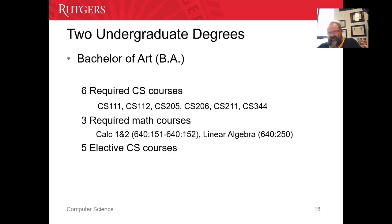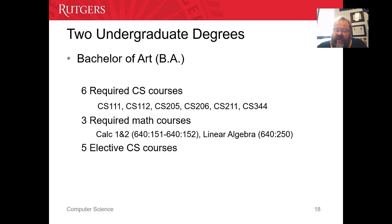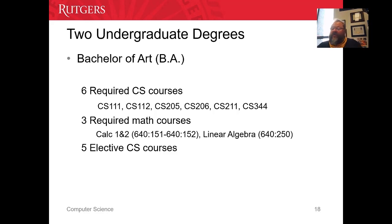Every computer science student who gets a degree — BA or BS — at Rutgers New Brunswick has to take those six courses. Those are the six required foundation core courses. You also have to take three math courses: Calculus 1 out of the math department (course 151, or you can also take 135), and Calculus 2. For Calculus 2, we require 152 — we do not accept 136.